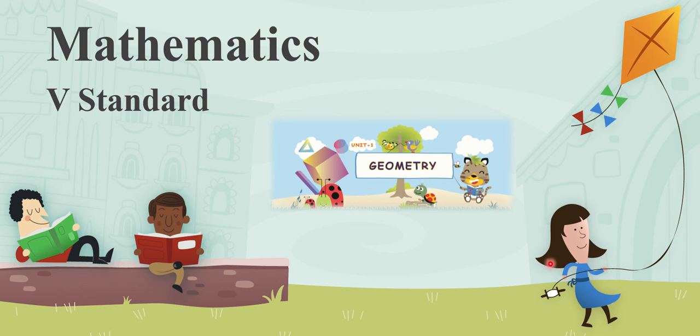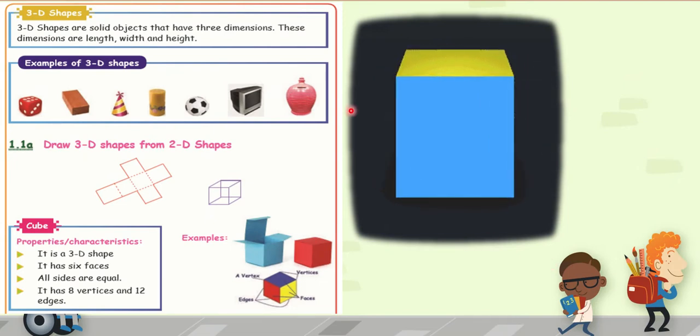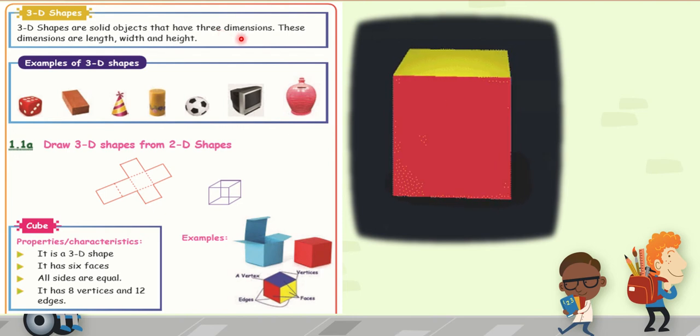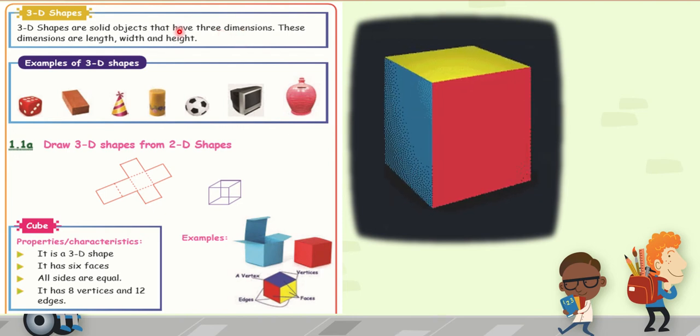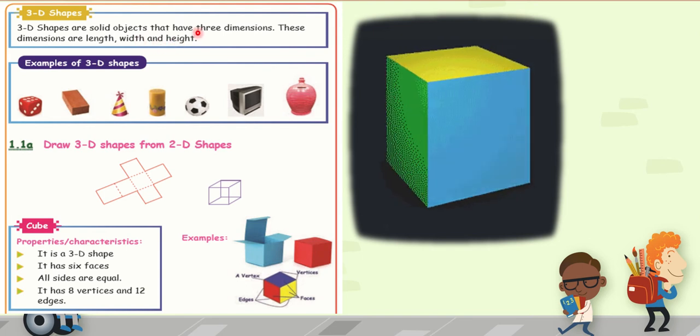Next we are moving into three-dimensional shape. What is three-dimensional shape? It is a shape which has three dimensions: length, width and height.